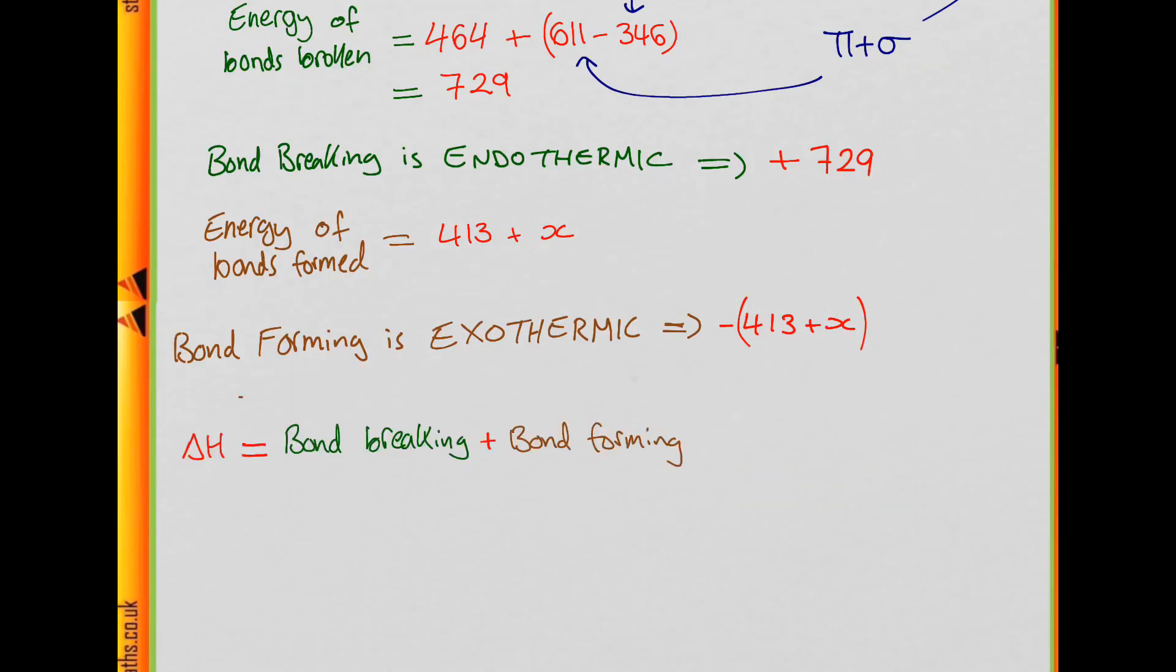So the total enthalpy change will be the sum of the energy of bond breaking and bond forming. So we have 729 minus 413 minus X.